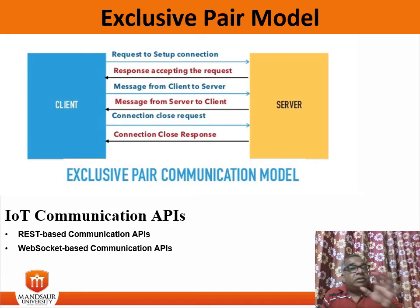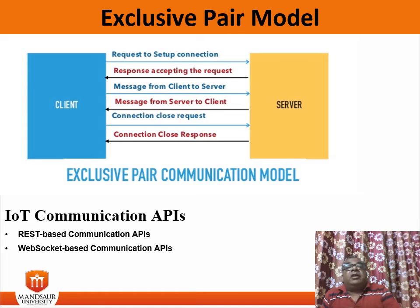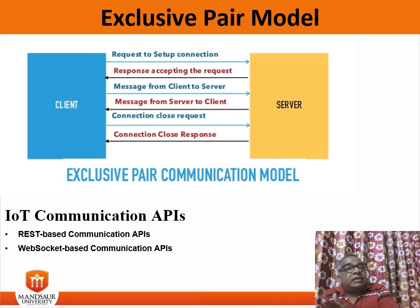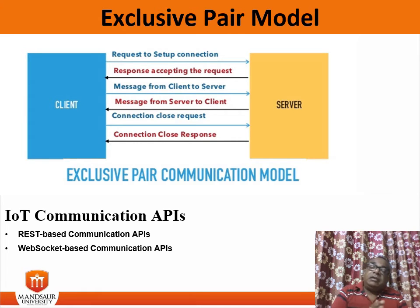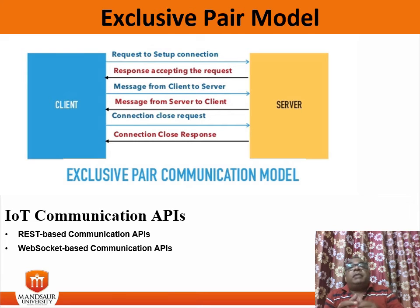The layered system constraint restricts the behavior of components such that each component cannot see beyond the immediate layer with which it is interacting. For example, a client cannot tell whether it is connected directly to the end server or to an intermediary along the way. System scalability can be improved by allowing intermediaries to respond to requests instead of the end server, without the client having to do anything different.